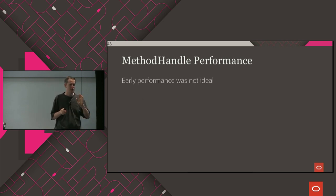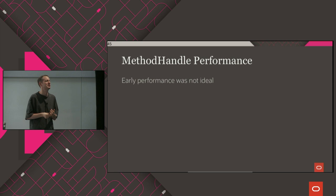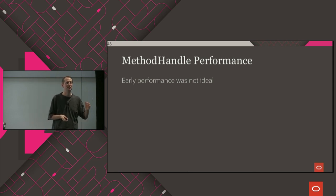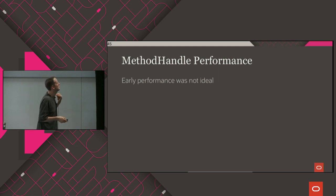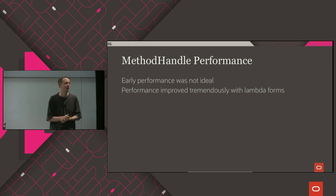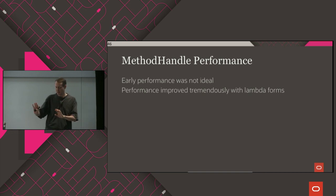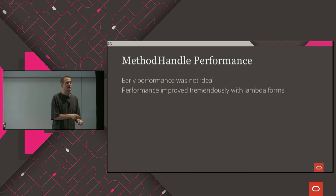Method handles are essentially a more efficient reflection mechanism. When they first came out in JDK 7, performance wasn't great — people tried using them and found them super slow and stuck with reflection. But then performance improved dramatically with the Lambda forms work that John Rose did for JDK 8, and it was further evolved and polished in later releases — a night and day difference in the performance story for java.lang.invoke. Nowadays, even if you have nothing to do with InvokeDynamic, there are use cases where you can replace reflection API code with method handles and see a significant speed-up.